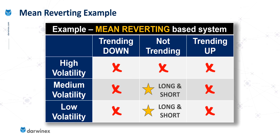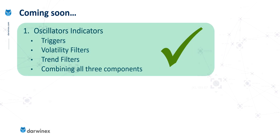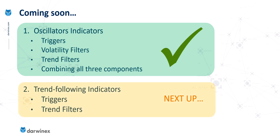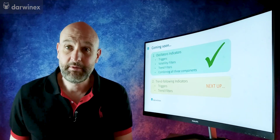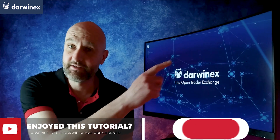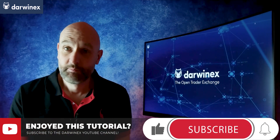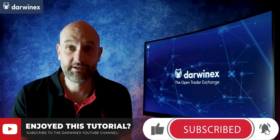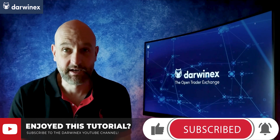So far in this series, in terms of the indicators we've looked at, these have all been oscillators. And this now concludes this section of the mini-series. Next, we're going to move on to a different class of indicator called a trend following indicator, and we're going to consider their use for both triggers and also trend filters. If that next episode is already available, you can find it at the top of the screen. Please do remember to give me a like if you've got value from today. Until next time, trade safe.